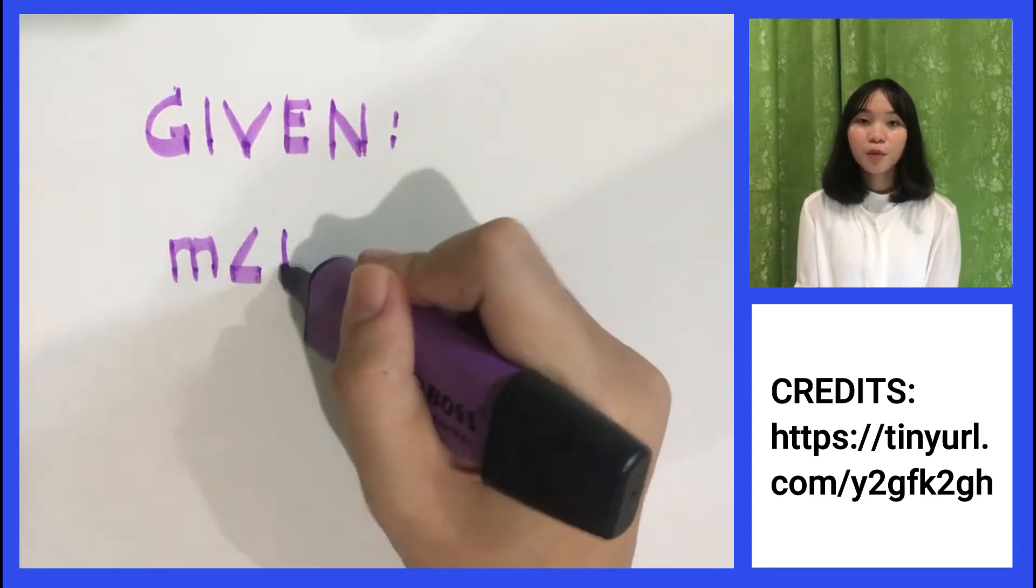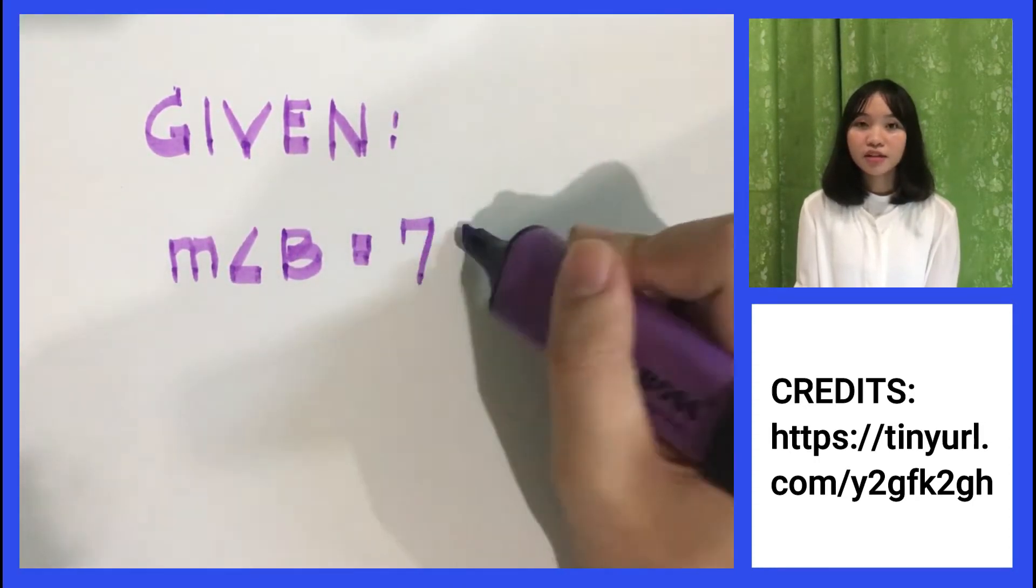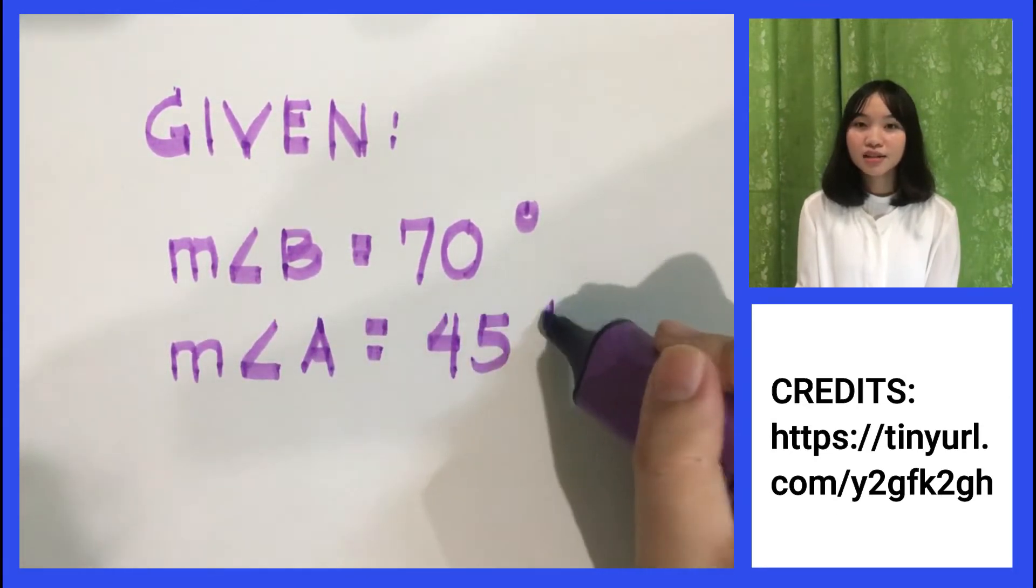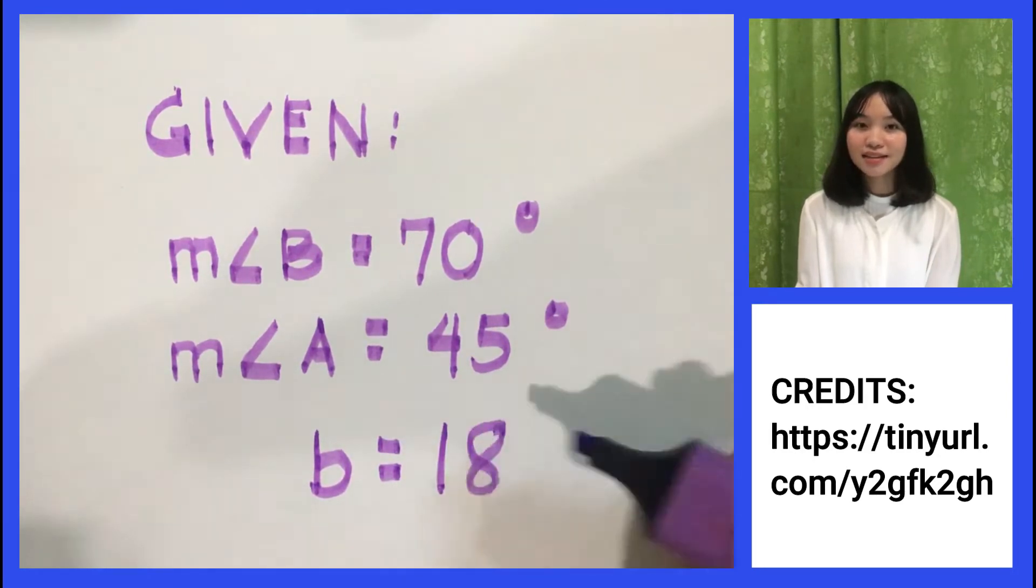Step 1 is to illustrate the problem and determine the given. Measure of angle B equals 70 degrees, measure of angle A equals 45 degrees, and side b equals 18.